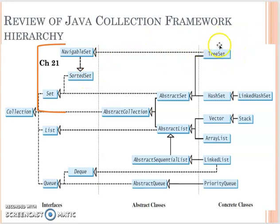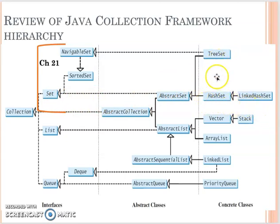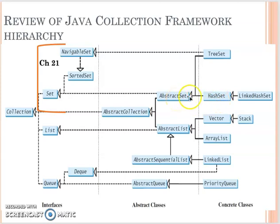The tree set not only contains non-duplicate values, but the elements will also be in sorted order. That's one of the set concrete classes we will introduce. We also have two other concrete classes for the set: hash set and linked hash set. Hash set and linked hash set are both inherited from the abstract set. In the abstract set, the stored objects need to implement the hash code function, which determines where to store the data.